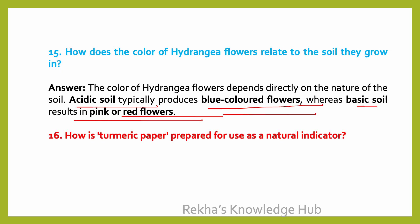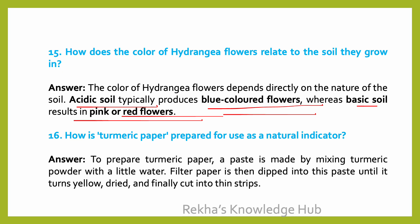How is turmeric paper prepared for use as a natural indicator? A paste is made by mixing turmeric powder with a little water. Filter paper is then dipped into this paste until it turns yellow, then dried and finally cut into thin strips.